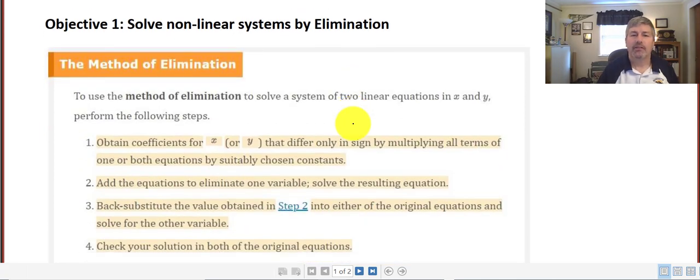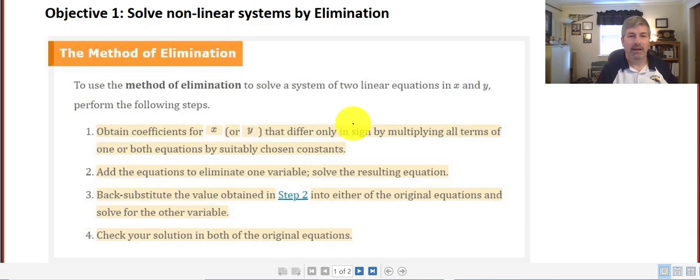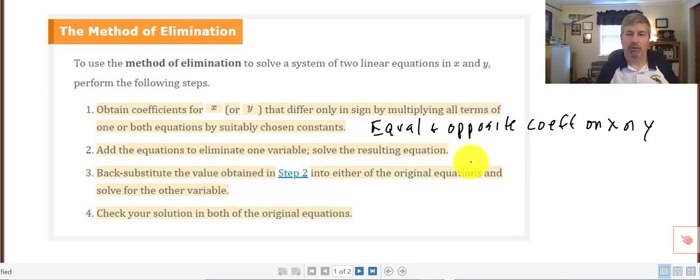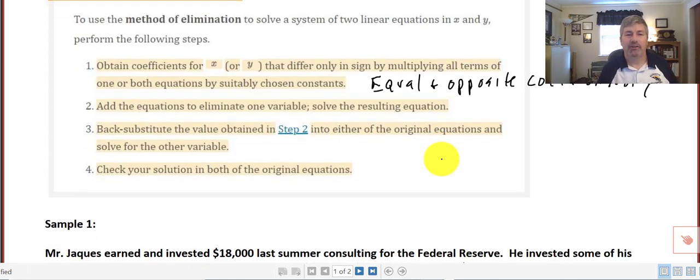In order to solve systems by elimination, the process is listed below. I would encourage you to embrace this elimination method because we're going to be using it quite a bit in future sections when we work with matrices. Using the elimination method, obtain coefficients for x or y that differ only in sign. Essentially, we want equal and opposite coefficients on one of your variables. Then add the two equations to eliminate that one variable because one's positive and one negative. Solve the resulting equation, then back substitute the value to find the other variable and check your solution in both equations.